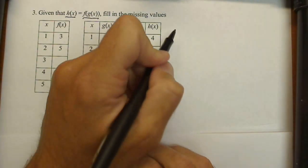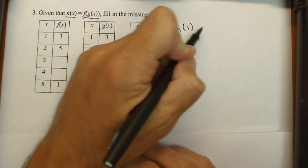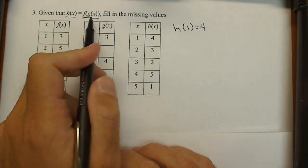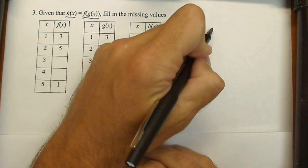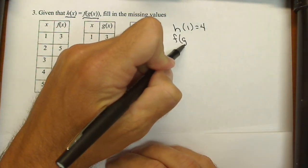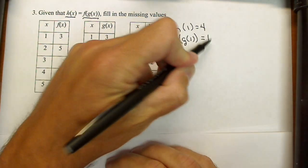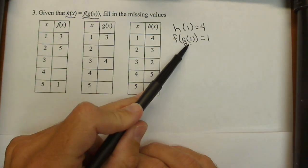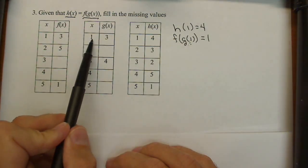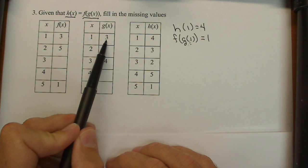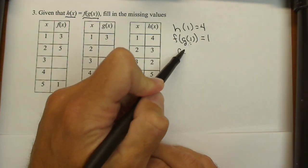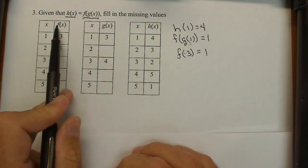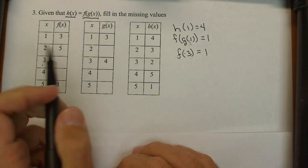So for instance, right here I know that h(1) equals 4. So let's make a note of that: h(1) equals 4. Well, h(x) is f(g(x)), so that means f(g(1)) equals 4. Let's see what g(1) is - g(1) is 3. So f(3) must equal 1, and we can fill in that box.